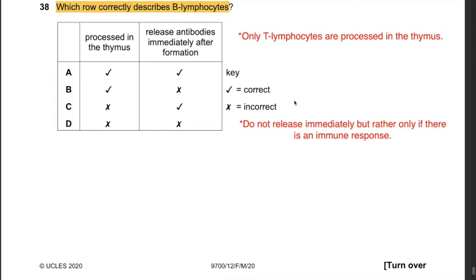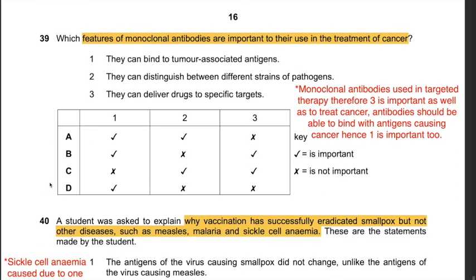Question 38: Which row correctly describes B lymphocytes? Processed in the thymus - incorrect, only T lymphocytes are processed in the thymus. Release antibodies immediately after formation - incorrect, B lymphocytes only release antibodies when they come in contact with a foreign antigen during an immune response. Therefore the answer is D. Question 39: Which features of monoclonal antibodies are important for cancer treatment? They can deliver drugs to specific targets (3) - very important as monoclonal antibodies are used in targeted therapy. They can bind to tumor-associated antigens (1) - also important. The only answer with both 1 and 3 is B. Hence the answer is B.